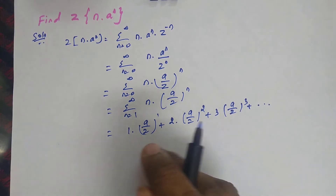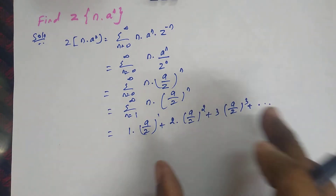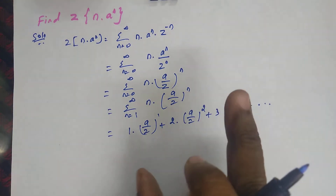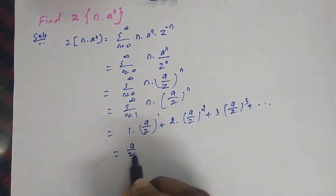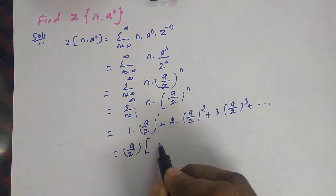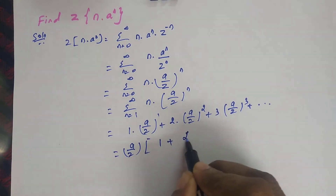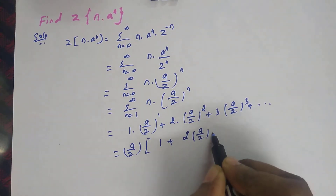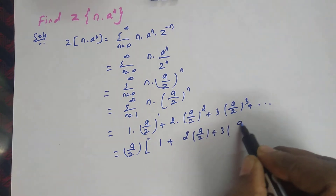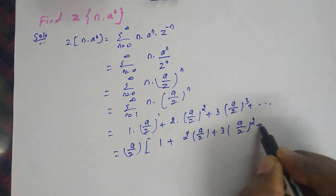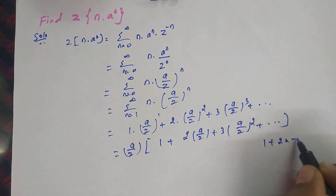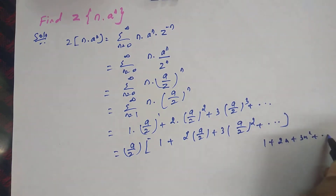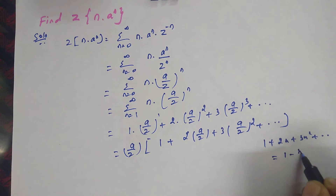As we know, for results involving 1 plus x or 1 minus x, the first term should be 1. So here we can take a/Z outside, leaving 1 plus 2 into a/Z plus 3 into a/Z squared plus etc. This is of the form 1 plus 2x plus 3x squared plus etc., whose result is 1 minus x whole power minus 2.